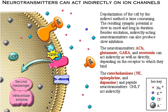The catecholamines — norepinephrine, epinephrine, and dopamine — and peptide neurotransmitters only act indirectly.